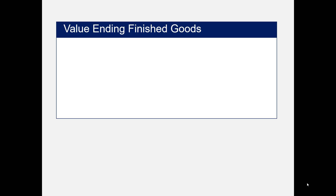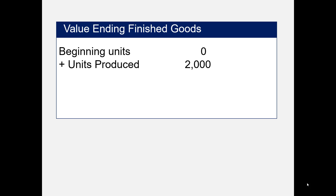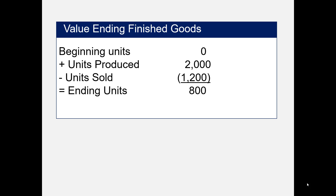Now we'll value ending finished goods. We had zero units to begin with since this is the first month of operations. We produced 2,000 units and sold 1,200, leaving 800 units in ending finished goods. Each unit is valued at $4.30, which includes direct material, direct labor, variable overhead, and fixed overhead. That computes to $3,440, so the 800 units are valued at $3,440 on the balance sheet.